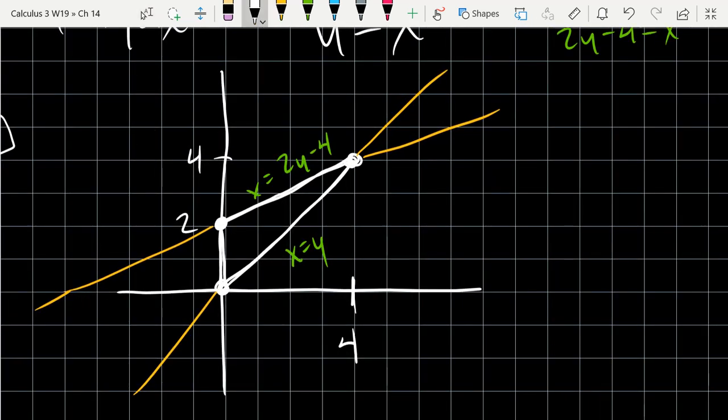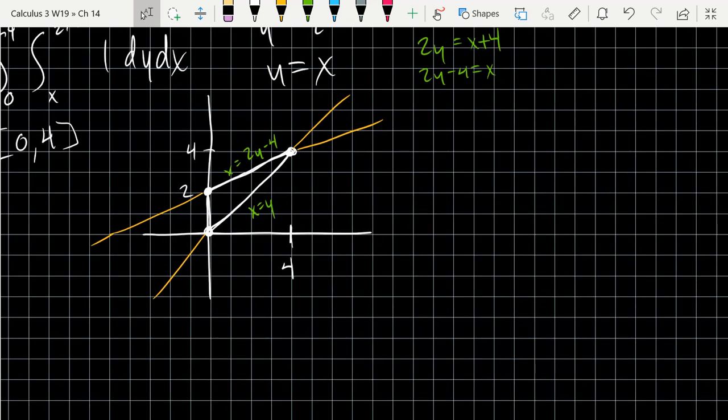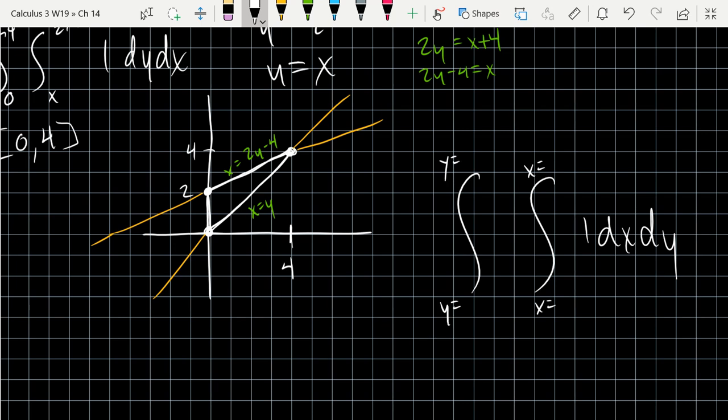Let's go ahead and now do our best to write down this region with intervals, dx dy changed around. So we're going x in the interior, y in the exterior. Easy question. What's the small y value? Zero. And the big one's going to be 4.